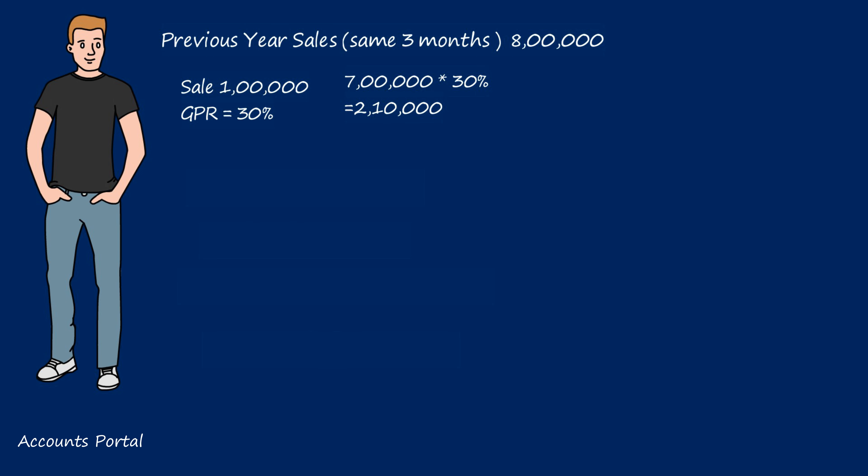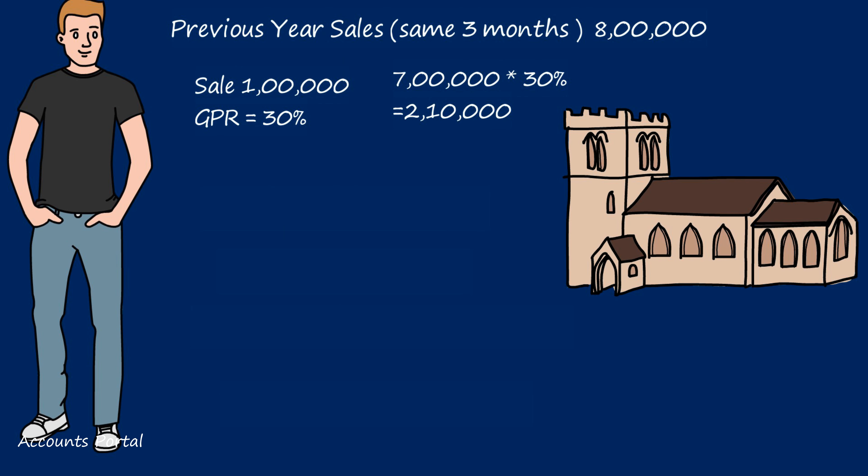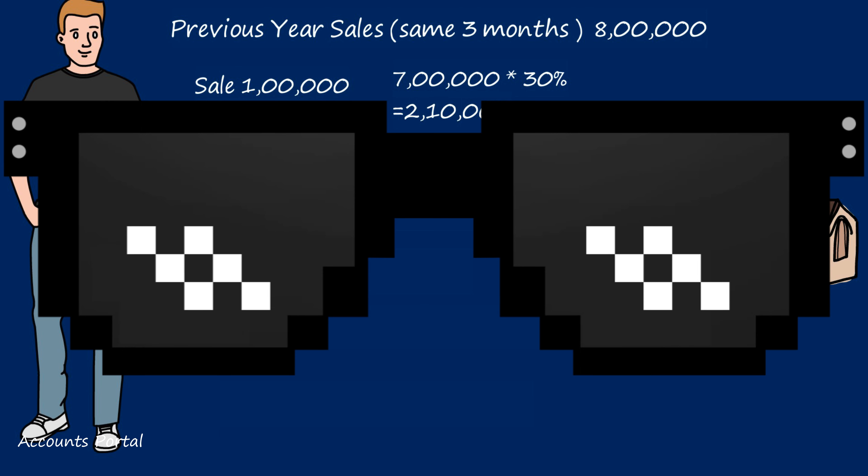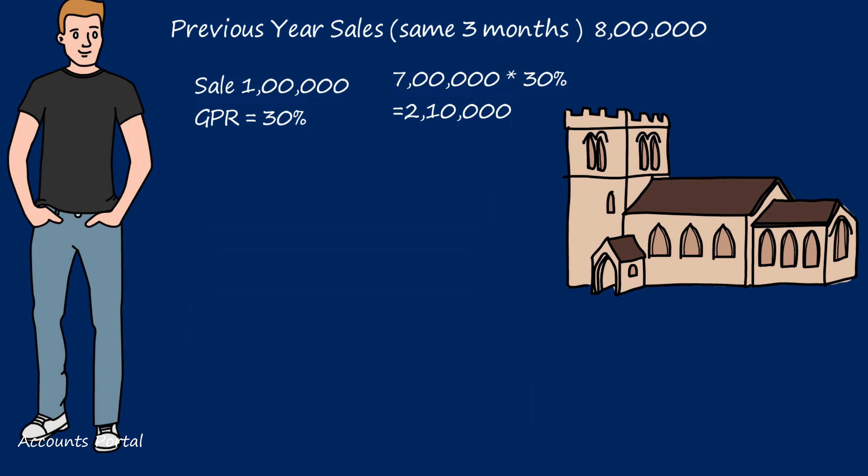The insurance company says extra expenditure will not be compensated. So I tell them: a nearby building is currently unoccupied. I can hire it for three months for a rent of fifty thousand. In those three months, I can generate sales up to five lakhs. Will you compensate me the fifty thousand? The insurance company still says no.